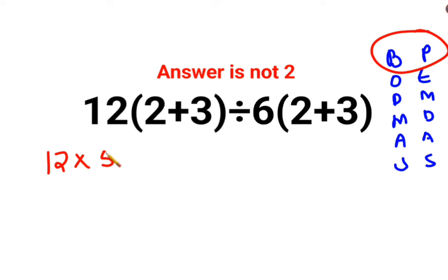2 plus 3 is 5. Divide by, let's keep it divided as it is, and this is 6. And then again 2 plus 3 is 5.